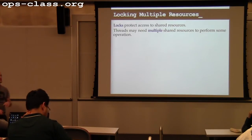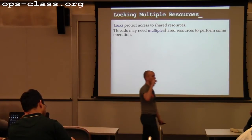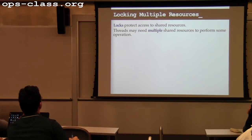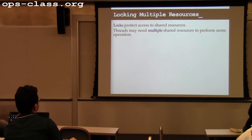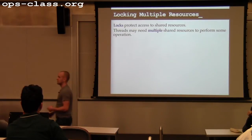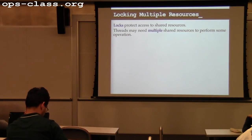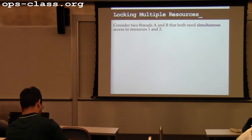Frequently, in order to perform some useful function on your system, a thread will have to access multiple shared resources, and those shared resources may each have their own lock. At this point, you can run into problems. Whenever you start using multiple locks, you have to be aware of the classic lock problem.